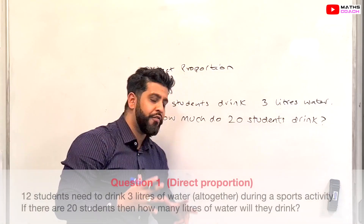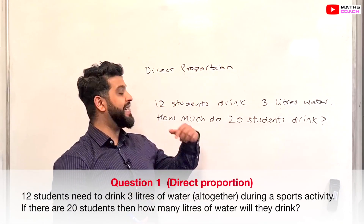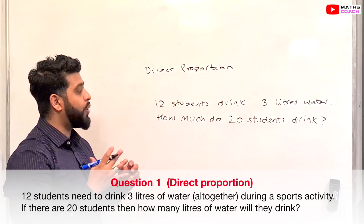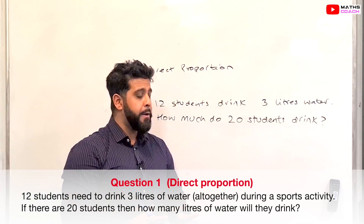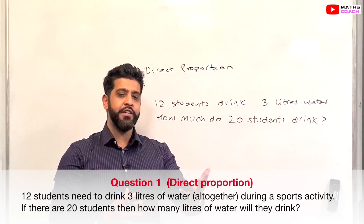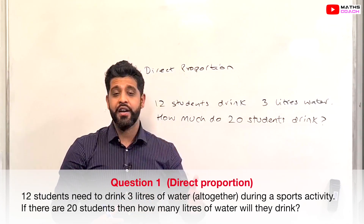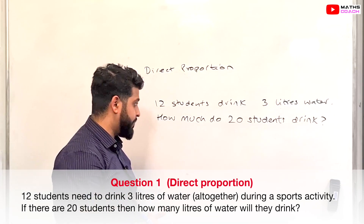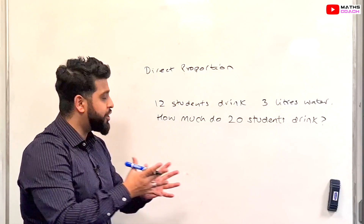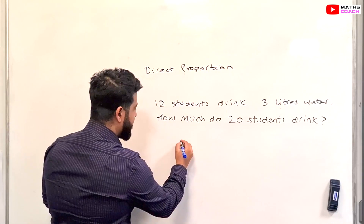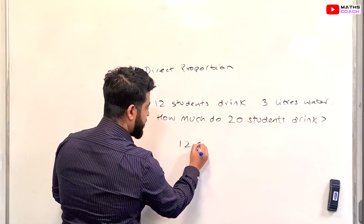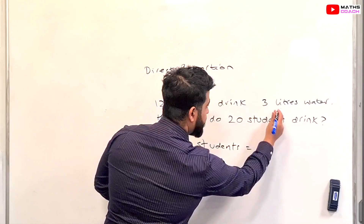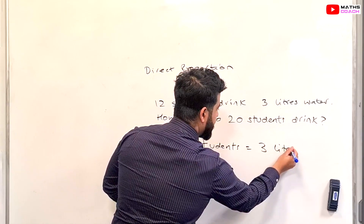On to our first question: 12 students need to drink 3 liters of water for a particular activity. How much do 20 students need to drink? We set it up in the following way: 12 students drink 3 liters.